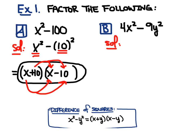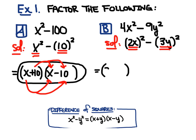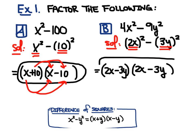Now let's look at part B. I'm going to rewrite this — this is a little trick and technique you need to be aware of. I can rewrite this as 2x all squared minus 3y squared. This is your first term, that's your x, and this is your second term, that's your y. Using the formula, this is going to equal 2x plus 3y times 2x minus 3y. Again, you can distribute this out to verify that it gives you 4x squared minus 9y squared.